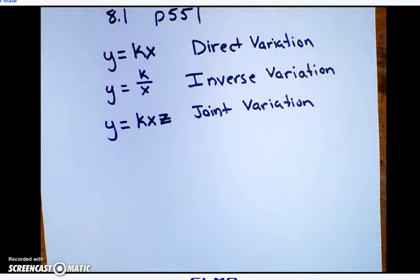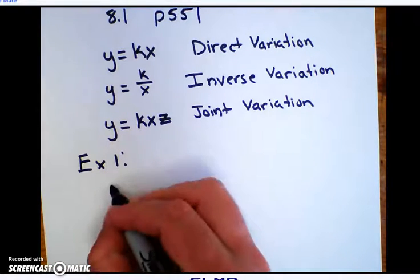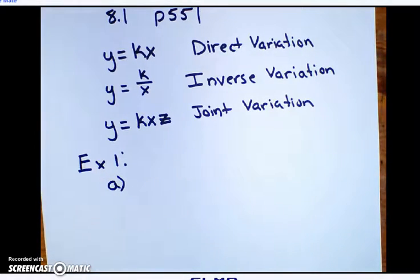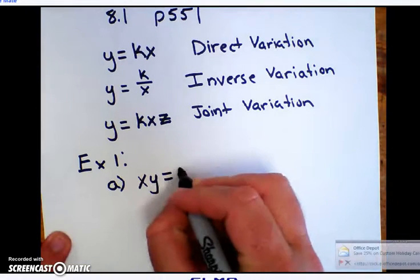We're going to do a few things with this. None of these are hard. It just takes a little bit of practice. Let's look at example one. What they want us to say is, is this joint, or I'm sorry, is this direct variation, inverse variation, or neither? Okay? So write this one down. xy equals 7.